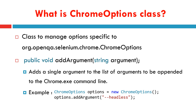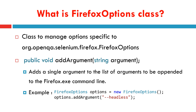We will pass the headless option to addArgument. As you can see in the example, we will create a ChromeOptions object, then call the addArgument method with the headless flag, and then pass this object to the ChromeDriver object.